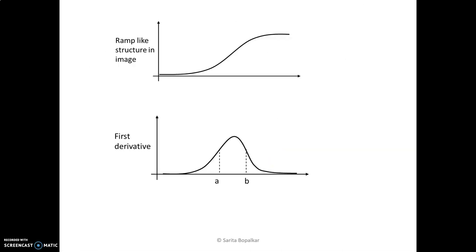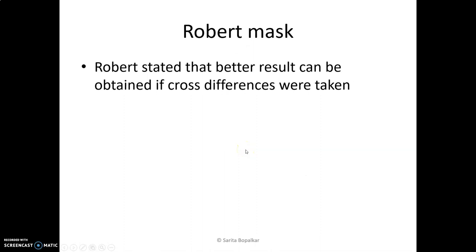One more thing we discussed in the last video: this is the ramp-like structure of an edge in an image, and its first derivative is like this. At different pixels, we are calculating the magnitude of the gradient. To decide the edge pixel, we decide the threshold. Whatever pixels lie between the range a to b are considered as edge pixels — this whole range is considered as edge pixels in a first derivative.